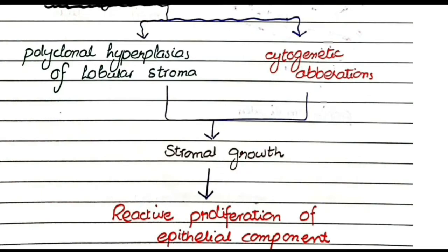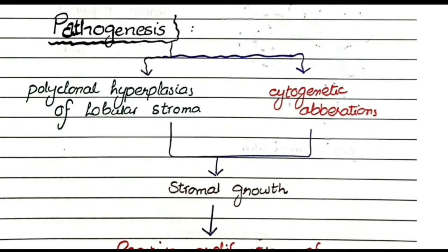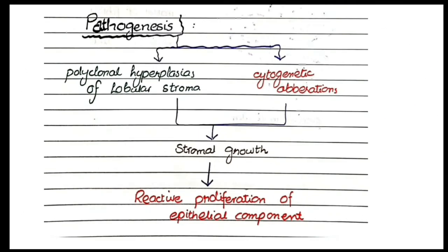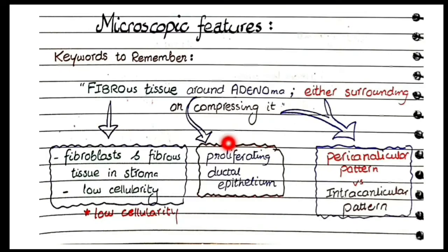Regarding pathogenesis, fibroadenomas are considered polyclonal hyperplasia of intralobular stroma. Cytogenetic aberrations can also contribute to these neoplasms. Together, these abnormalities result in stromal overgrowth, and the neoplastic stromal cells release growth factors that cause reactive proliferation of epithelial components — hence the 'adeno' in fibroadenoma.